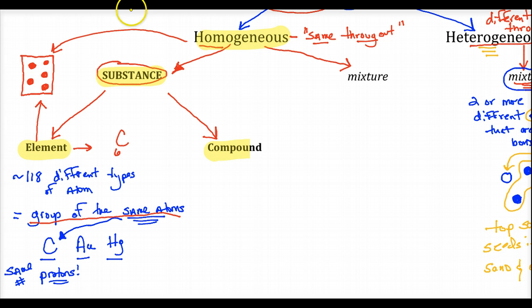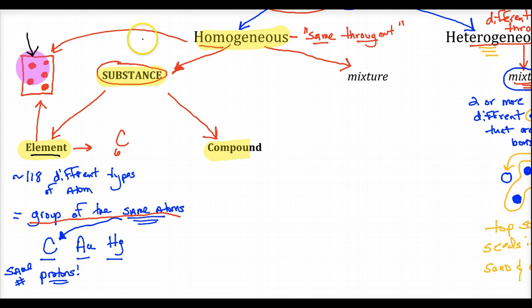The smallest unit of an element that gives its individual properties is the atom of carbon. Once you break an atom into quarks and gluons — beyond the scope of this course — you lose the individual properties of carbon. Carbon atoms give the element carbon its physical and chemical properties, so if you've got a group of them, we say we have an element.